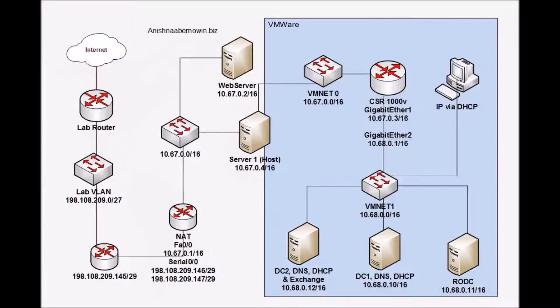The NAT box serves to do just that — network address translation. So when traffic comes in through this router, this router is able to route that traffic to whichever resources on the inside of this network are being requested.